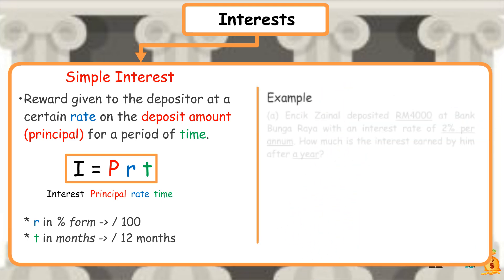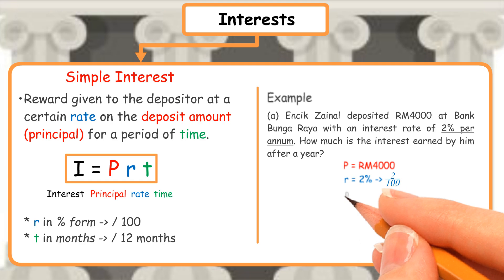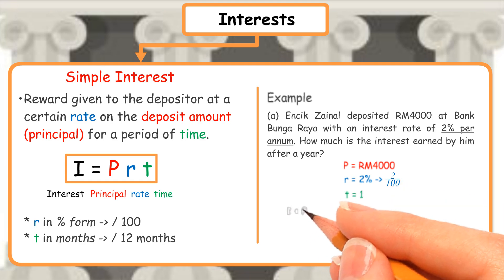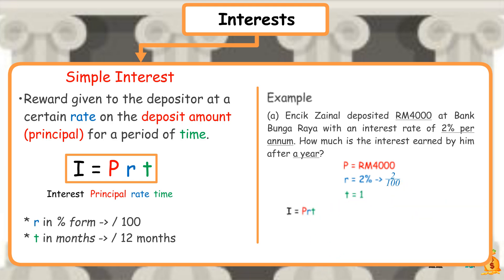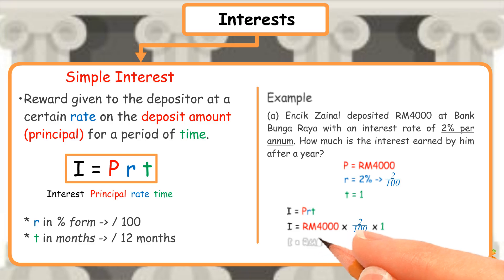Example A: A person deposited RM4,000 at Bank Bunga Raya with an interest rate of 2% per annum. How much is the interest earned after a year? Based on the question, P is RM4,000, R is 2% which equals 2/100, and T is 1 year. Using the formula I equals PRT: I equals RM4,000 times 2/100 times 1, equals RM80. Therefore, the interest is RM80.